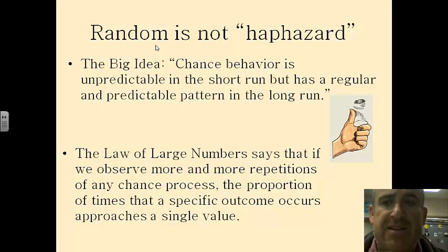And that leads us then into something called the law of large numbers. And the law of large numbers says that if we observe more and more repetitions of any chance process, the proportion of times that a specific outcome occurs approaches a single value. So for example, if I flip a coin, and this also is the big idea,